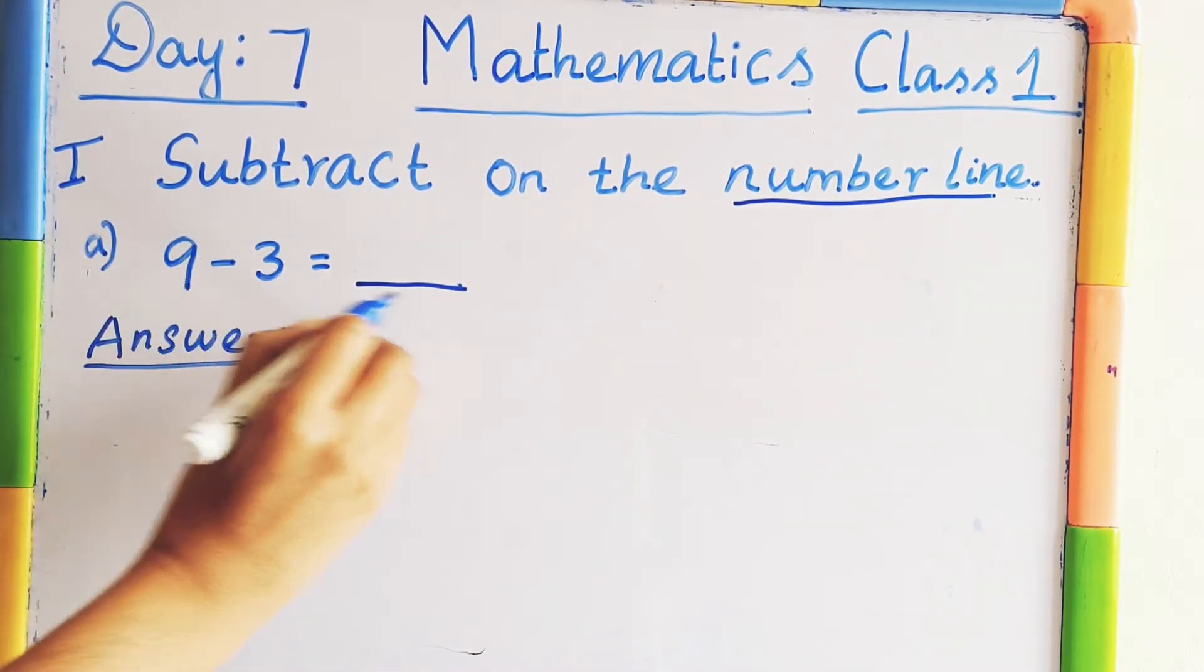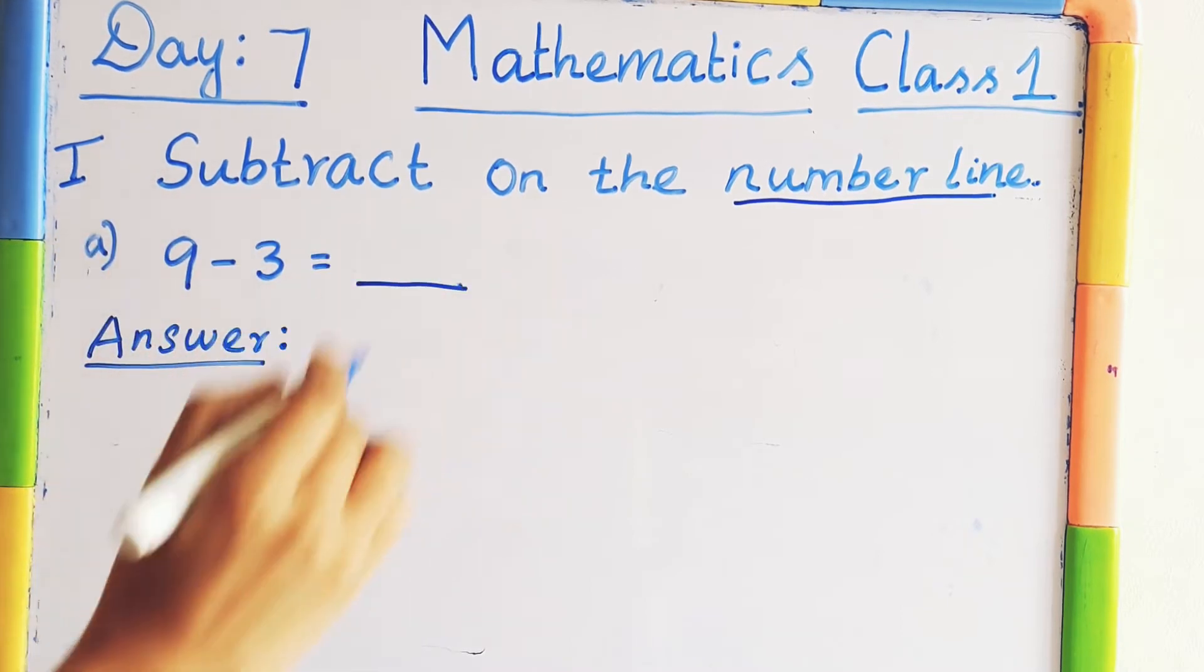9 minus 3 equal to dash. We have to find out the answer using the number line.